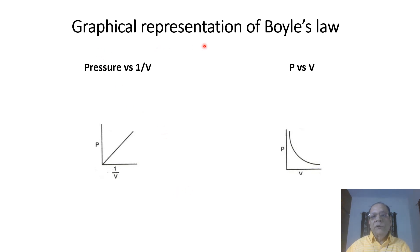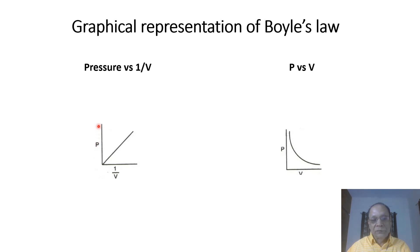The graphical representation of Boyle's law is also very important. We have pressure versus 1/V: 1/V is plotted on the x-axis and pressure is plotted on the y-axis. The relationship between P and 1/V — note it is 1/V, not V — is a straight line passing through the origin.